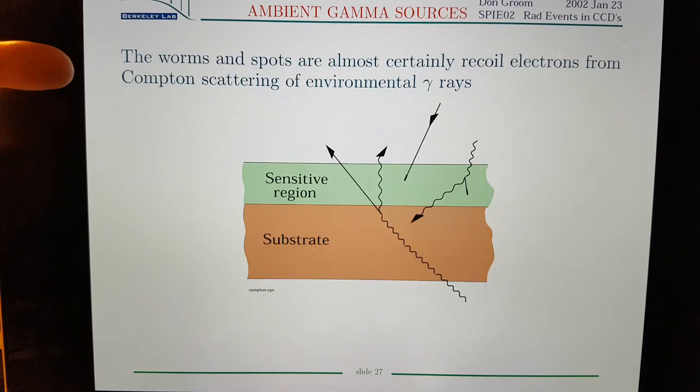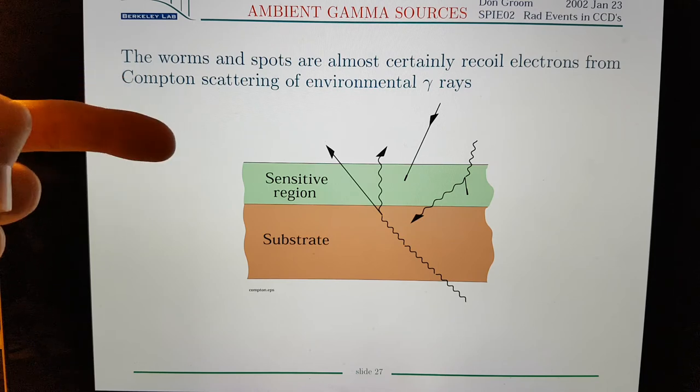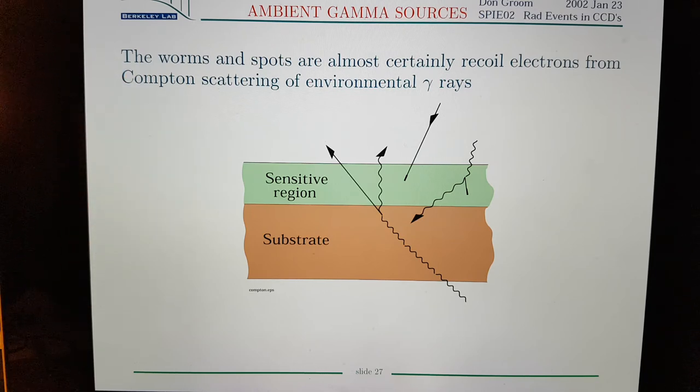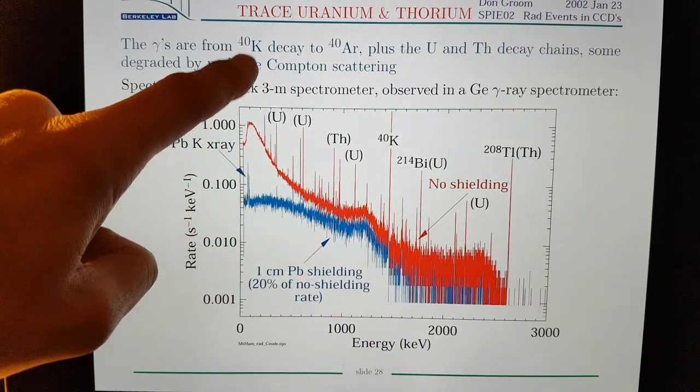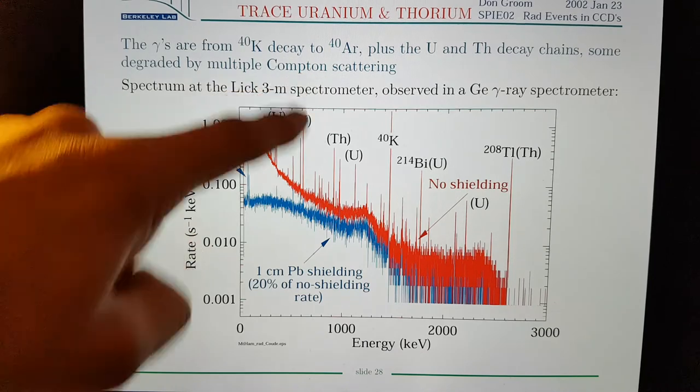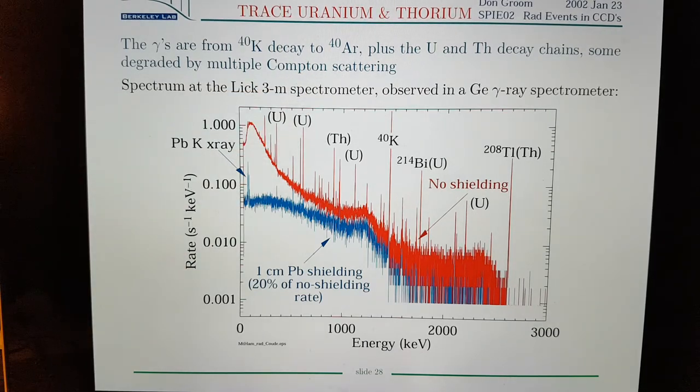Here it's saying the worms and spots are almost certainly recoil electrons from Compton scattering of environmental gamma rays. And the biggest problem is apparently potassium 40 decay to argon 40. And obviously there's potassium everywhere.